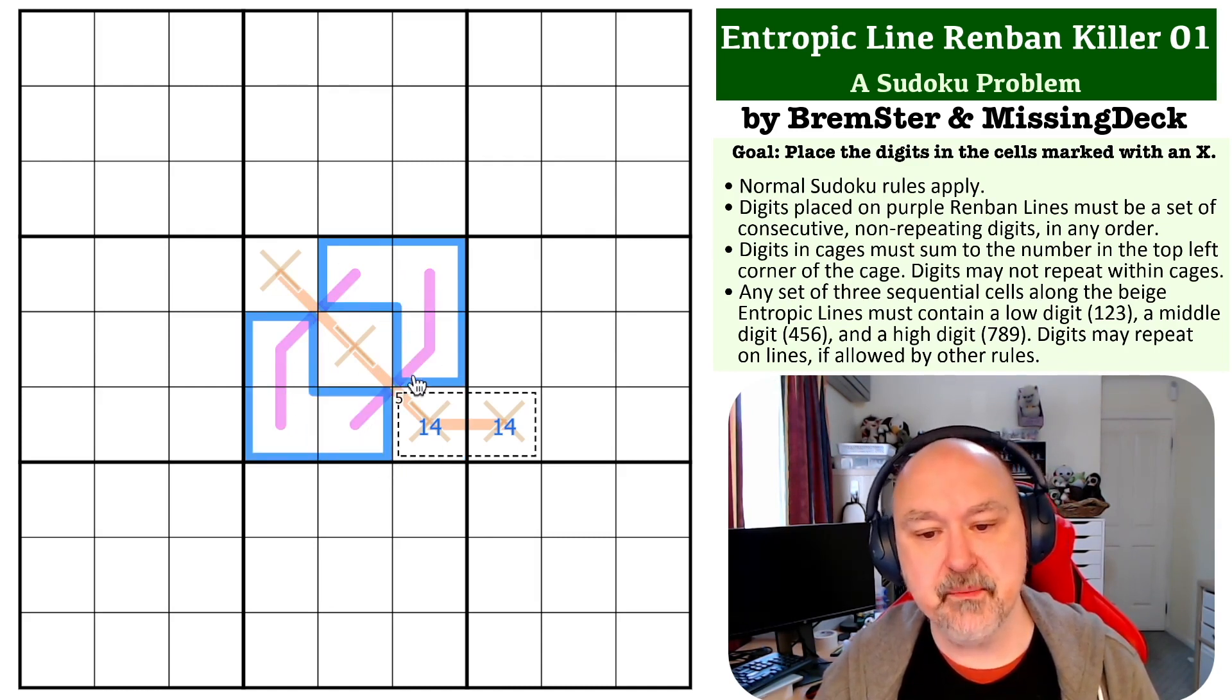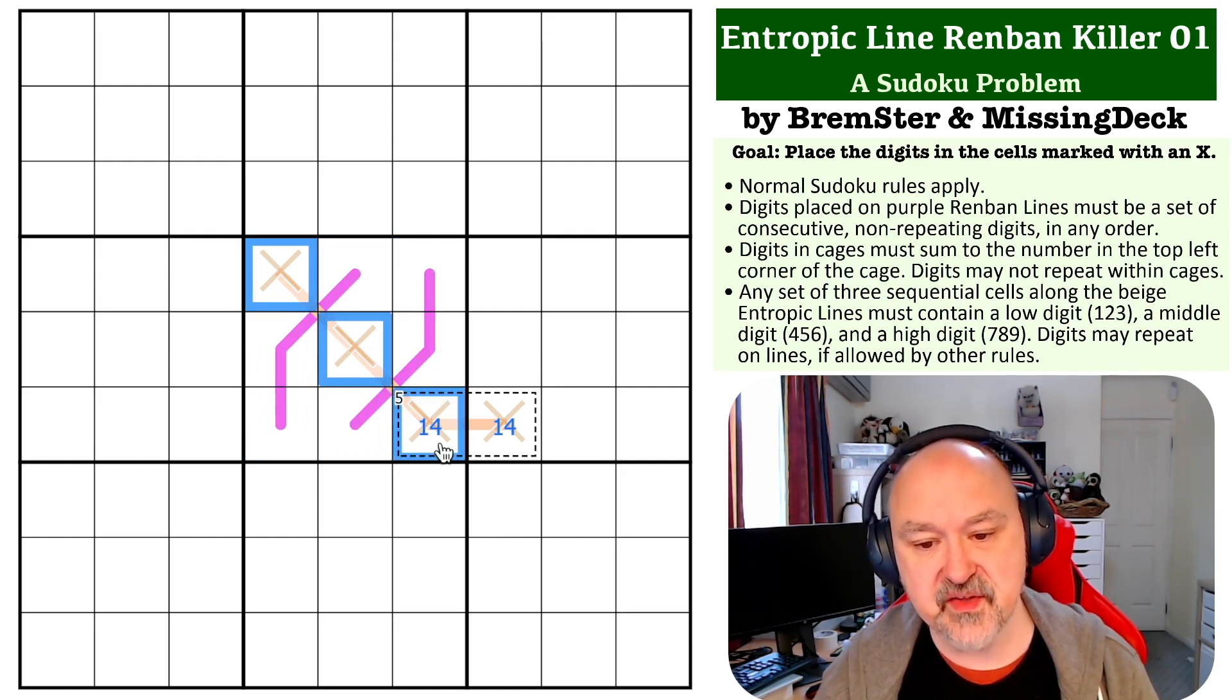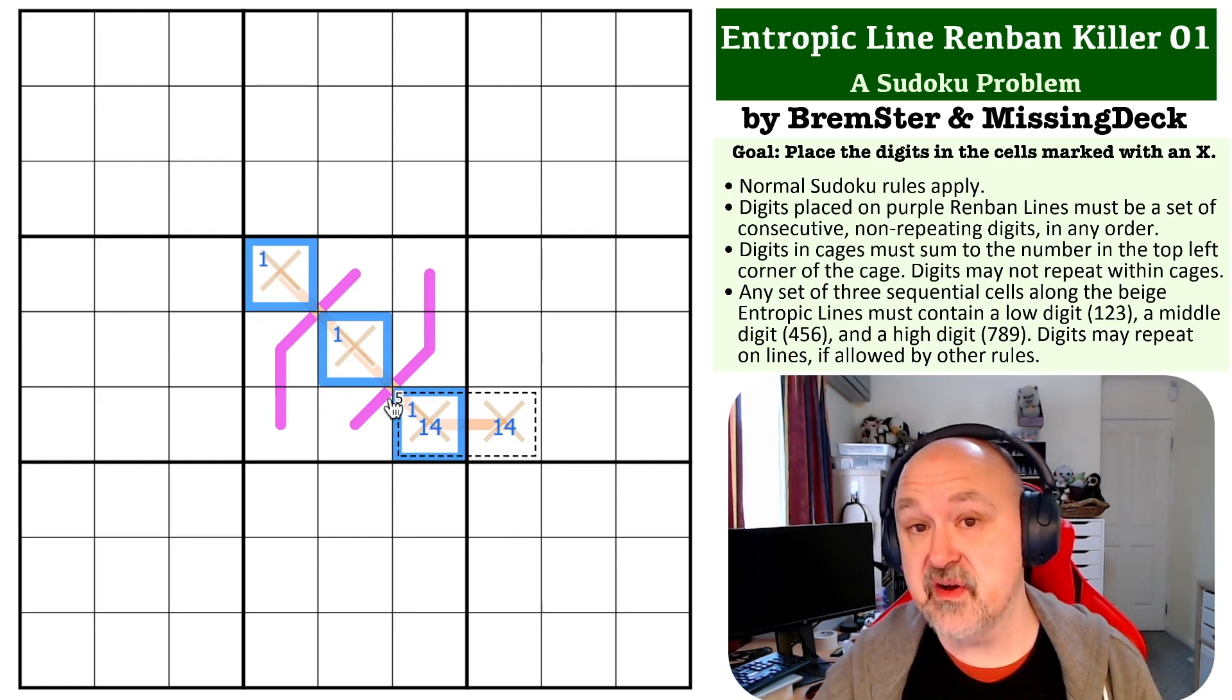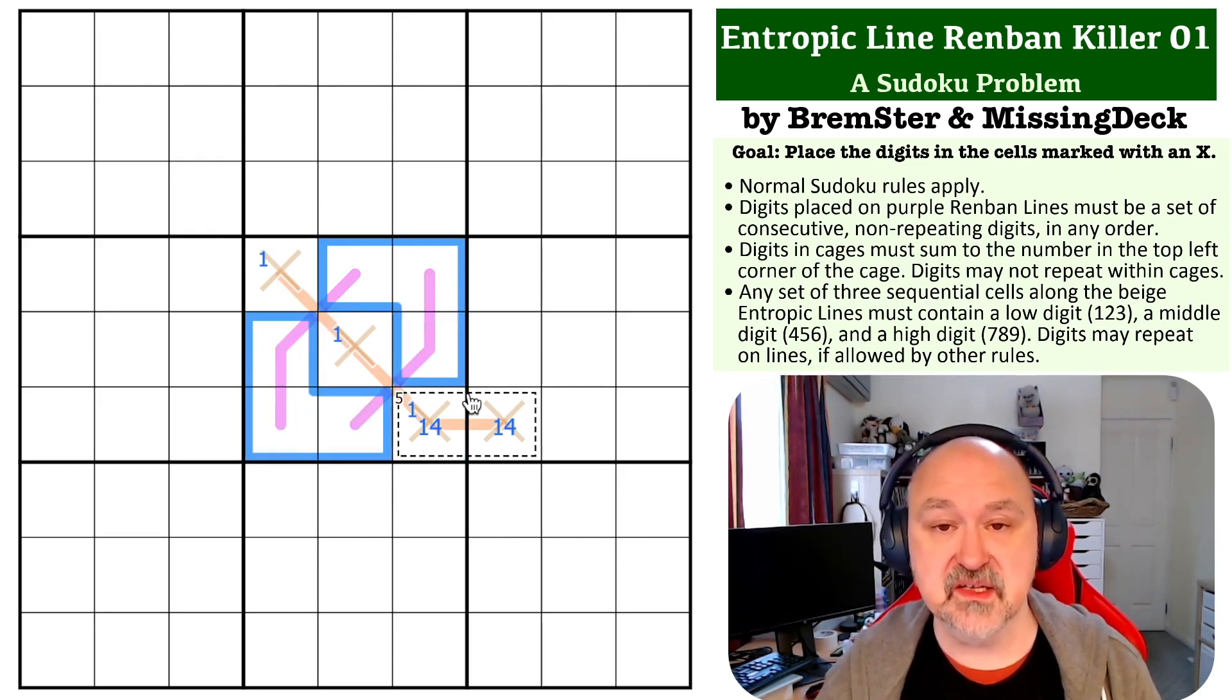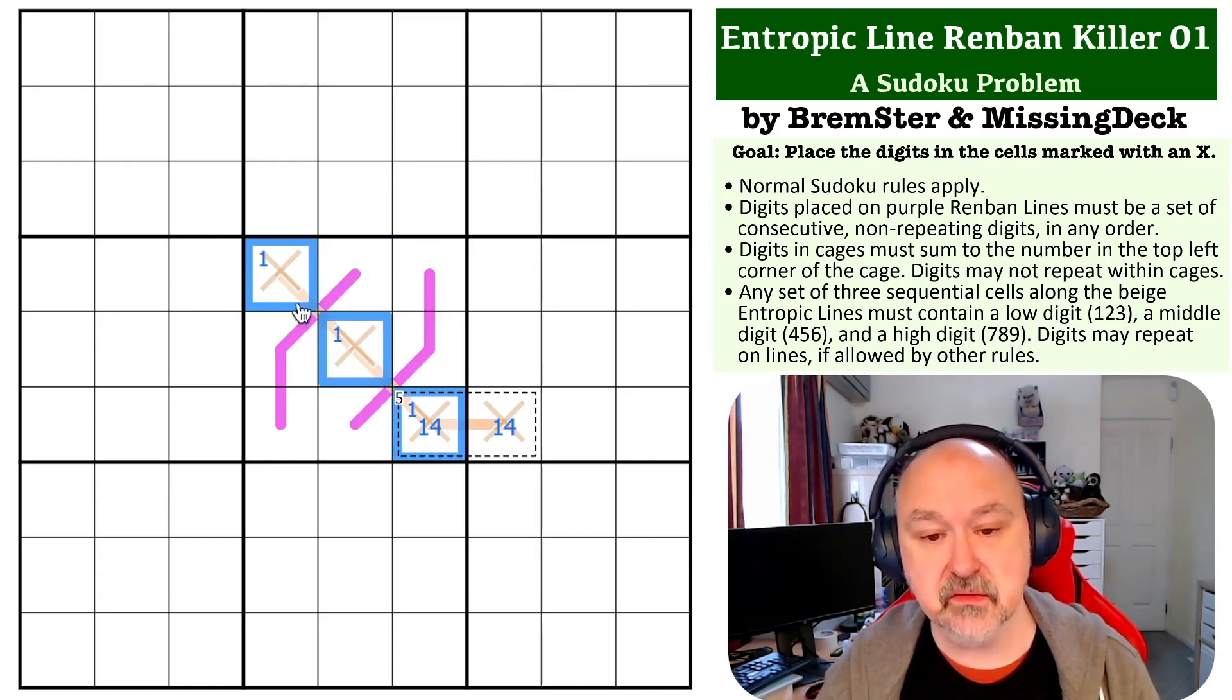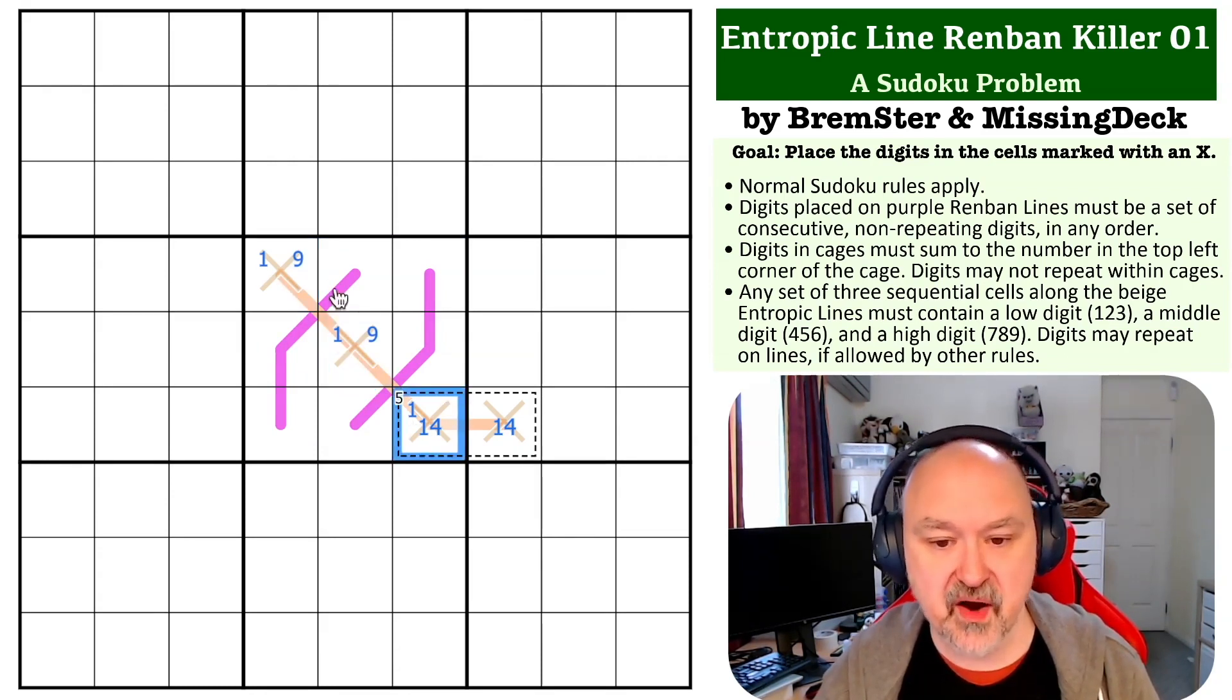So because the Renban line takes all of the options except for these, the 1 must go onto the entropic line. The same is true for 9. If you put 9 onto one of these Renban lines, then it would become 9, 8, 7, and there would be no high digit to go into those three cells. So the 9 can't go onto the Renban line. It must go onto the entropic line, can't go in the 5 cage.